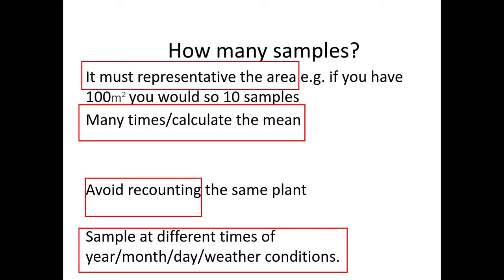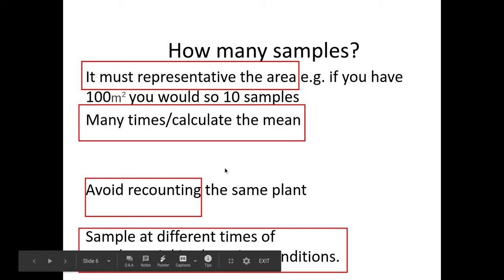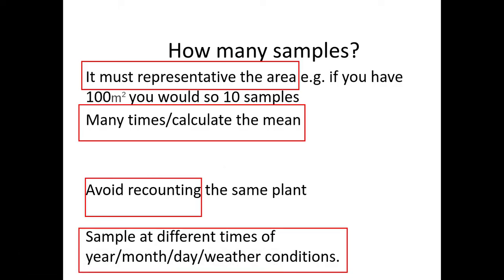We need to make sure we're doing it many times so we can calculate a mean. We need to make sure we're using a method that's going to avoid recounting the same plant — that might be putting a little mark on it or moving it to one side once you've counted it. And we need to make sure we're sampling at different times of year, month, or day, or at different weather conditions. These are in red boxes because they're taken directly from the mark scheme.